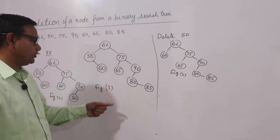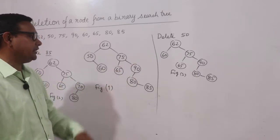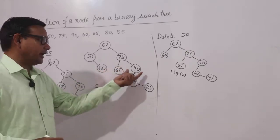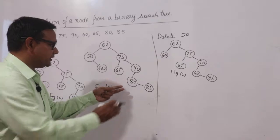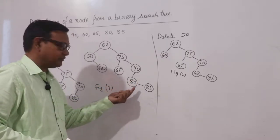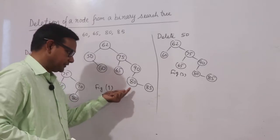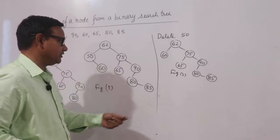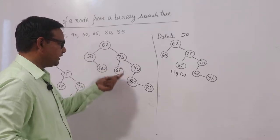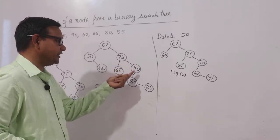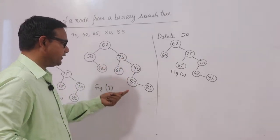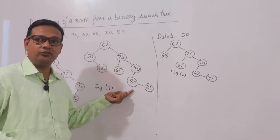Now if I have to delete 90, it has a left child, and this left child is also having a right child. Since 80 will be less than 90 and greater than 75, if I delete 90, then 80 will be the right child of 75, and 85 will be the right child of 80.